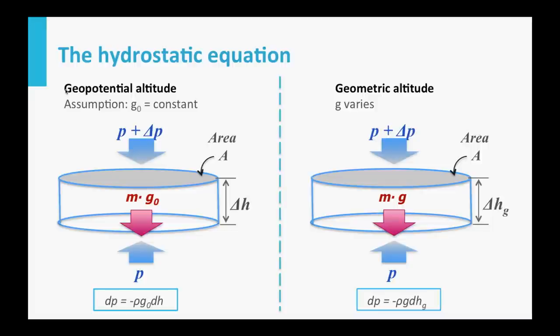The altitude which we calculated, which is the geopotential altitude as it is commonly called, is not the real altitude. The real altitude is the geometric altitude, and you would use the geometric altitude if you also let the gravity acceleration vary with altitude, because the force of gravity decreases as we get further away from the center of the earth.